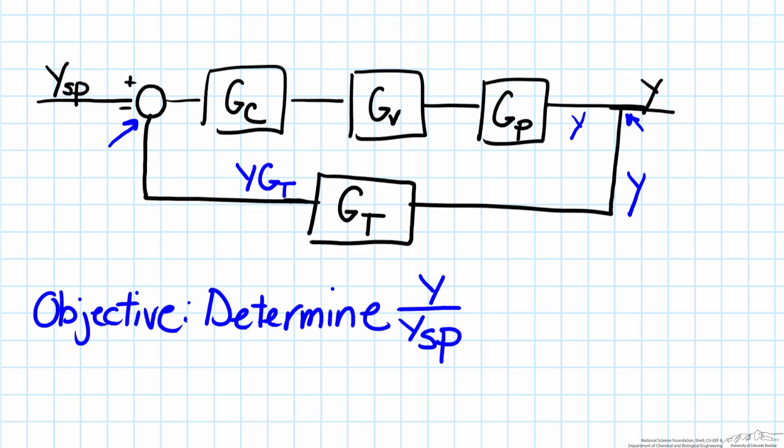So therefore the value after our summing point is going to be ysp minus y times Gt. It will leave us with ysp minus yGt, all multiplied by Gc.